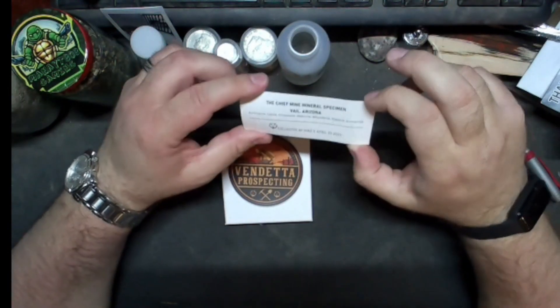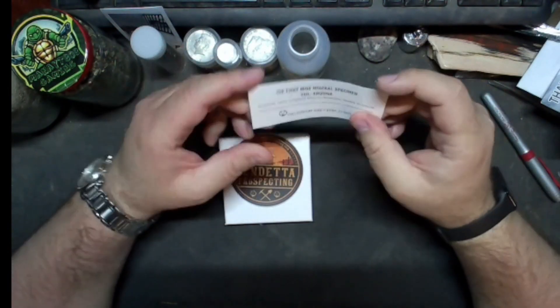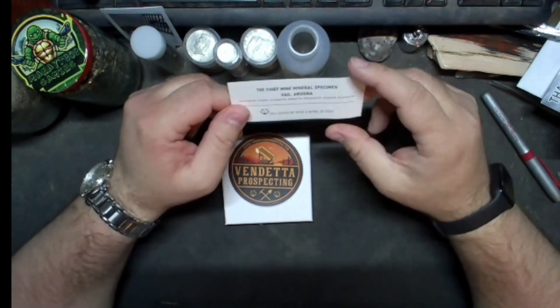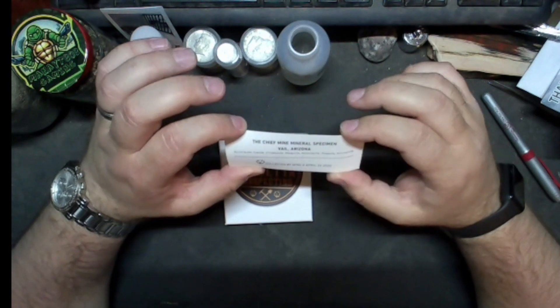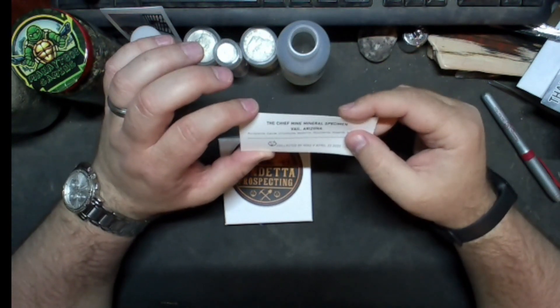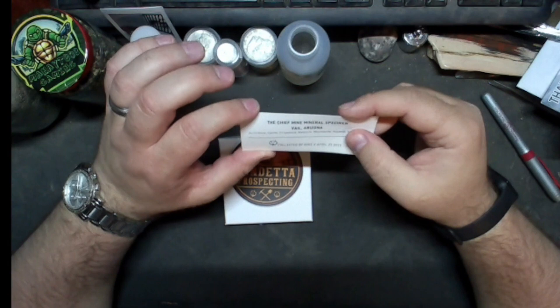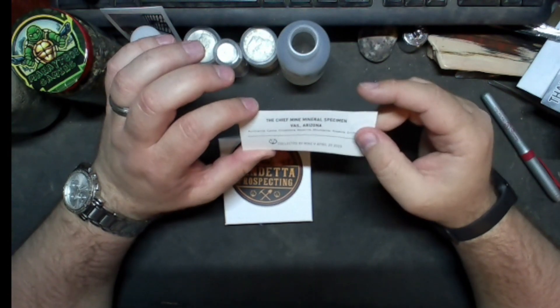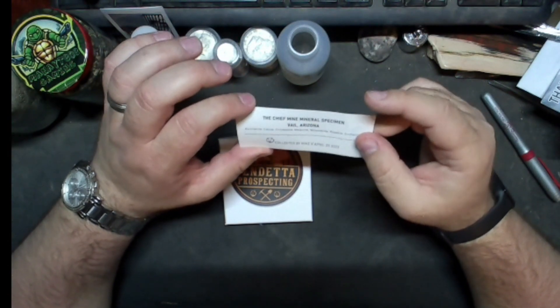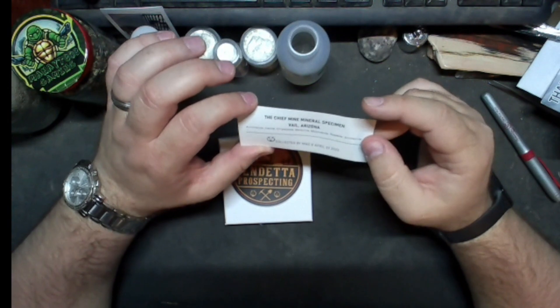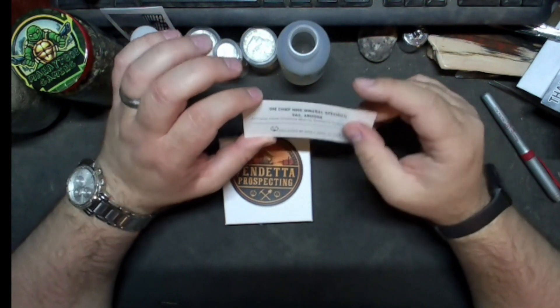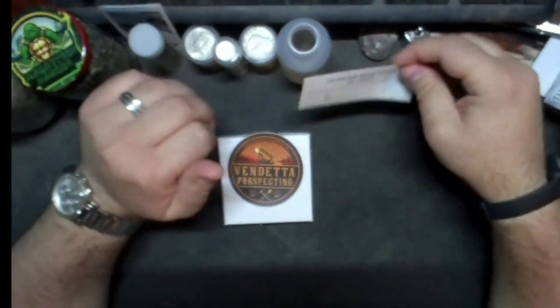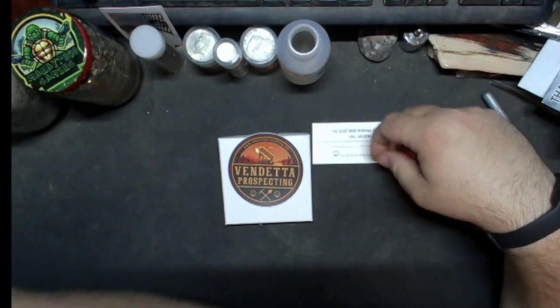And then I got a little sign here. It says the Chief Mine mineral specimen, Vale, Arizona. So I can't say this mostly myself, but Calcite, Chrysocolla, Malachite, Molybdenite, Rosasite. I am horribly butchering these names, but you know, it is what it is.